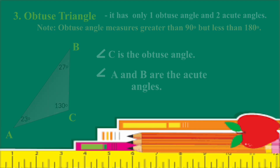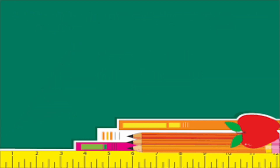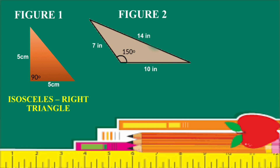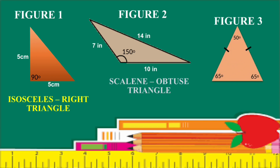Now, let us classify the following triangles. Figure 1 — what kind of triangle is this? It is an isosceles right triangle. Figure 2 — what kind of triangle is this? It is an isosceles acute triangle. Well done. Figure 3 — what kind of triangle is this? It is an isosceles acute triangle. Good job.